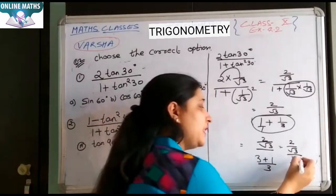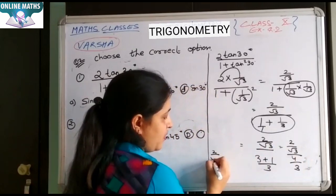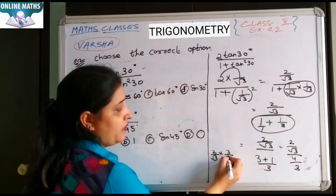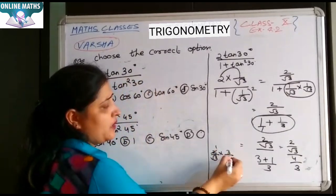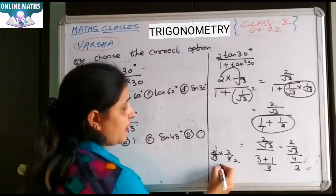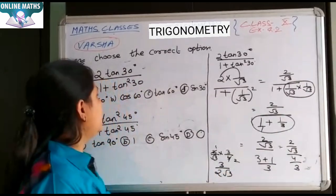Now 2 upon under root 3 upon 4 upon 3. Now what do you do? You should take reciprocal. That means reciprocal: 2 upon under root 3, 3 upon 4. Clear. Now cut it. 2 ones are 2, 2 twos are 4. What do you have? 3 upon 2 under root 3. Clear. 3 upon 2 under root 3.